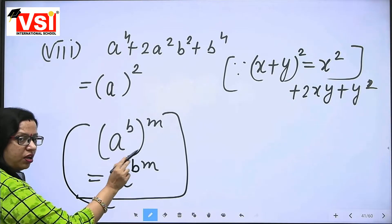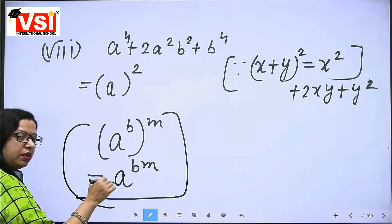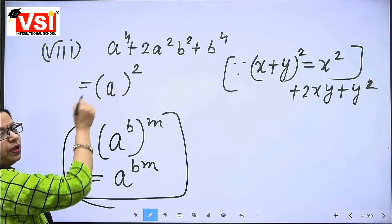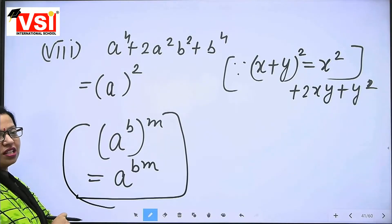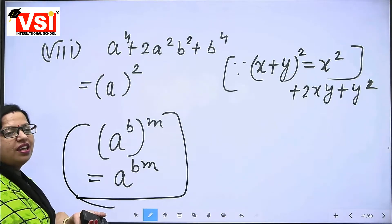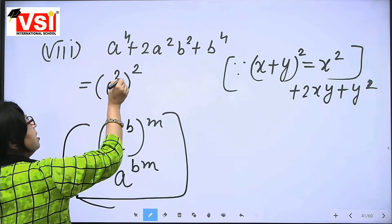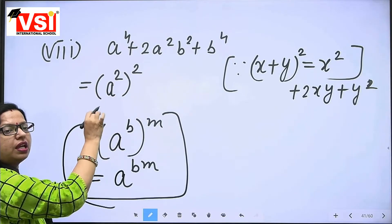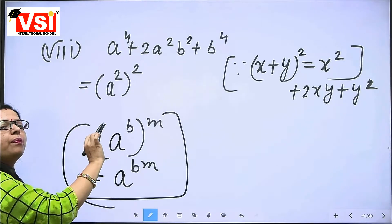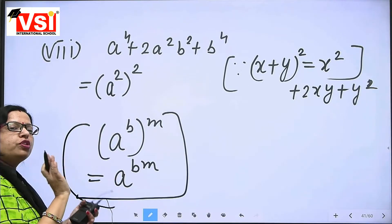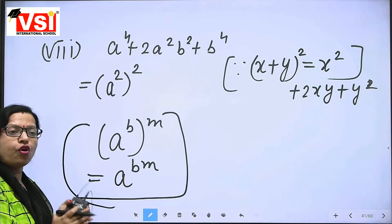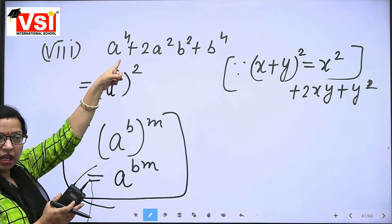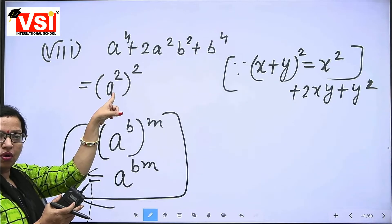That law is clear — power upon power, powers are multiplied. So we can use this law here. We should write A square here, because then power upon power: A square whole square gives A raised to the power 4 again. So if we open that bracket, we get back A raised to the power 4.